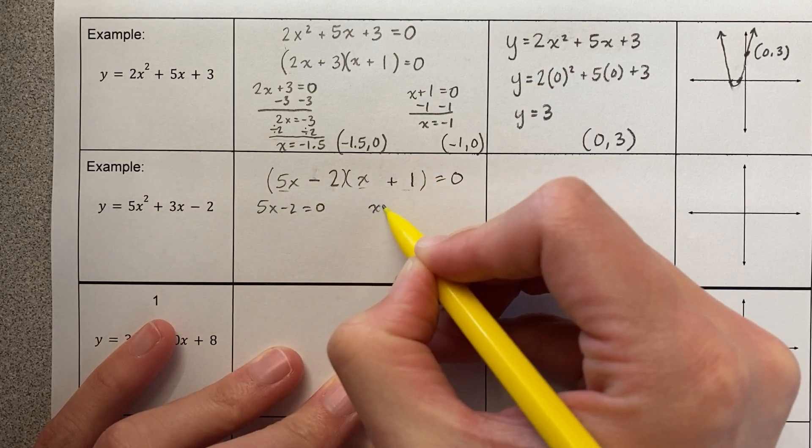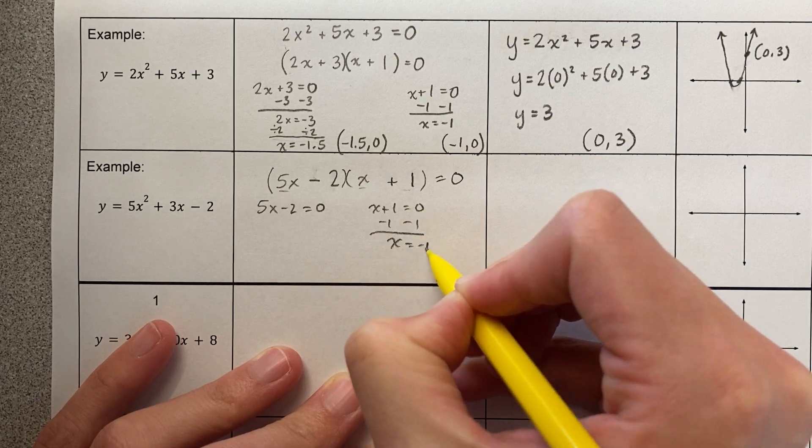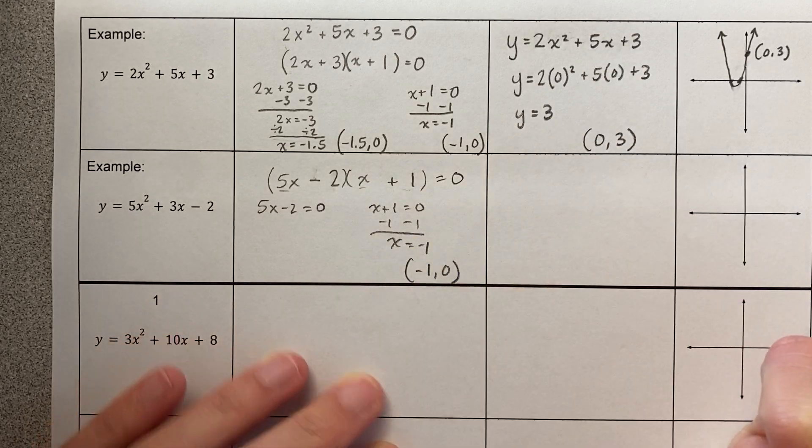So then here are my two equations: 5x minus 2 equals 0 and x plus 1 equals 0. So here I solve and I just get this, easy peasy lemon squeezy.